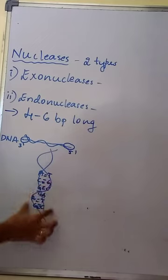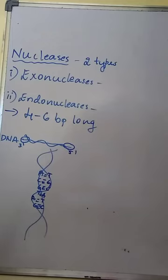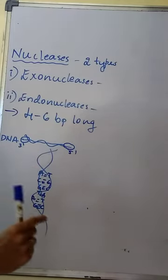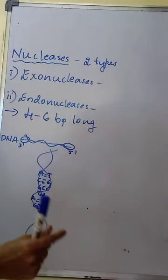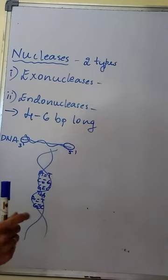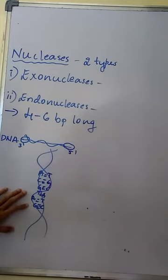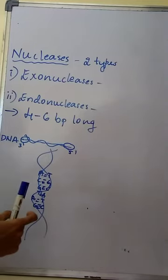Each restriction endonuclease recognizes a specific palindromic nucleotide sequence in the DNA. All restriction endonuclease enzymes recognize specific palindromic sequences — palindromic nucleotide sequences — present in the DNA.